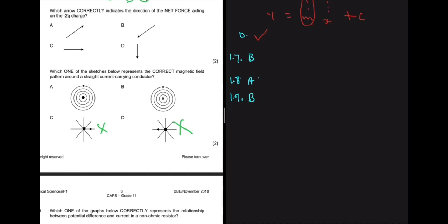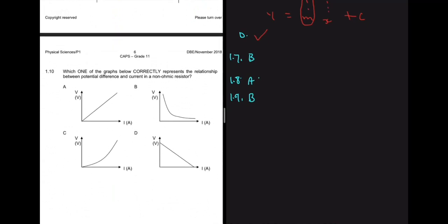Question 1.10 asks which graph correctly represents the relationship between potential difference and current in a non-ohmic resistor. Option A would apply for an ohmic resistor. Option B shows voltage increasing while current decreases, which can't be right. Option C looks like an ohmic resistor but instead of a straight line it's exponential, which is exactly what a non-ohmic resistor graph looks like. Our answer for 1.10 is C.